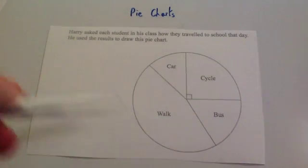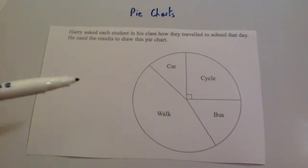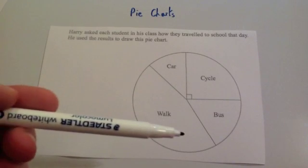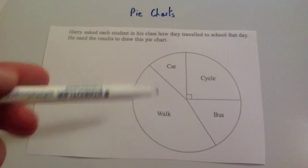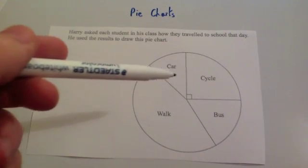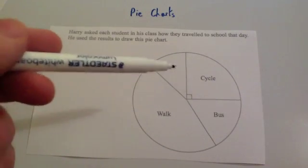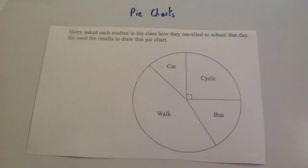So here we've got a pie chart. It says Harry asks each student in his class how they travelled to school that day. He uses the results in the pie chart. You can clearly see that walk is the most popular method of transport. And you've got car and bus being the two smallest ones. You'd actually probably have to measure them. I'm thinking car looks like it's actually the smallest one.